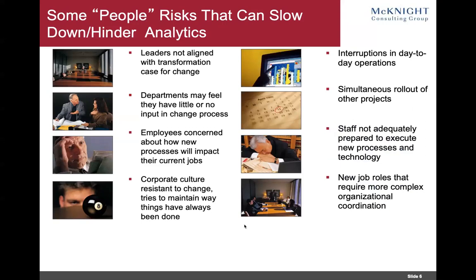This is a slide that I think belongs on your walls or in your project artifacts — something to pull out when there seems to be an issue. If leaders are not aligned with the transformation case for change, if they don't get that the projects we data analytic professionals work on are highly transformative to the company — talking about leveling up supply chain management, doing predictive maintenance, doing fraud detection — and modern projects taking them into artificial intelligence — if the leaders are not aligned with that, there's going to be issues down the road. If departments feel they have little or no input in the process, clearly that's going to be a problem.